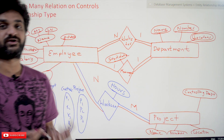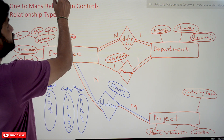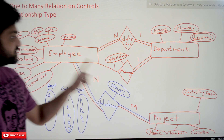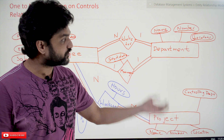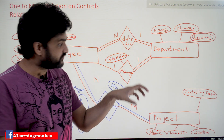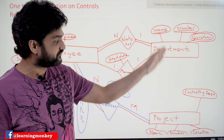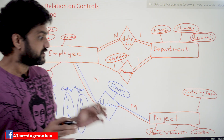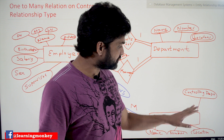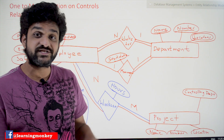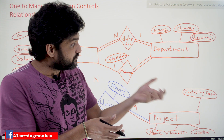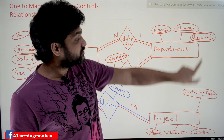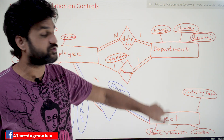We will try to explore more relationship types from this diagram. In our previous class we identified the relationship 'works on' between projects and employee. Now we will try to explore the relationship between projects and department. In the project entity, we have an attribute called 'controlling department,' which consists of the name or number of the department — meaning this attribute is representing another entity, so there is a relationship between department and project.